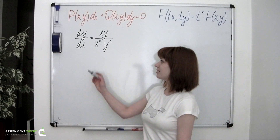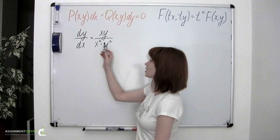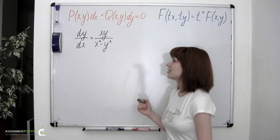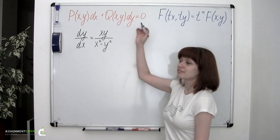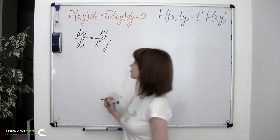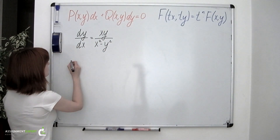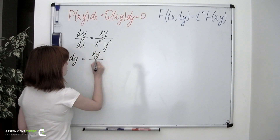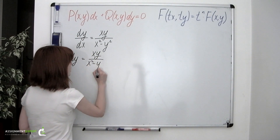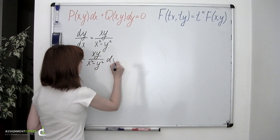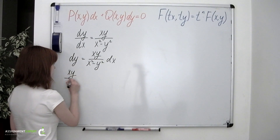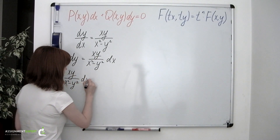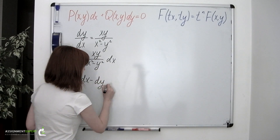Example 4. dy over dx equals xy over x squared minus y squared. Step 1: to write down the given equation in the form shown. So we have dy equals xy over x squared minus y squared dx, which gives us xy over x squared minus y squared dx minus dy equals 0.